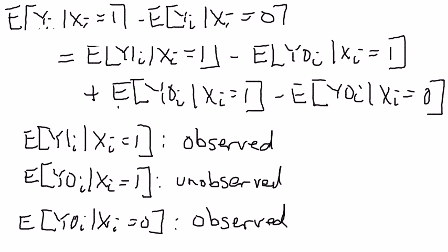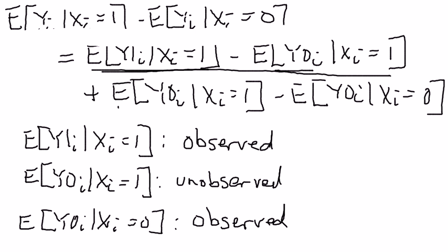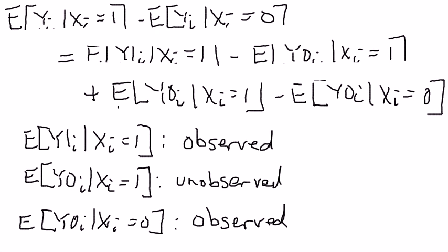This first difference here is the average causal effect. The first term here is observed, because it's the average starting salary for those people who choose to major in economics. The second term here is unobserved, because it's the average starting salary for people who majored in economics if we could go back in time and have them not major in economics. So that's the average causal effect — that's what we'd like to be able to estimate.